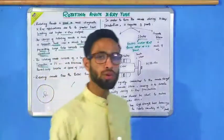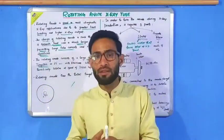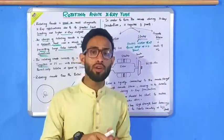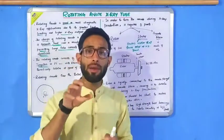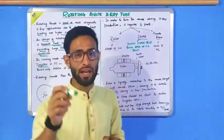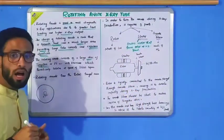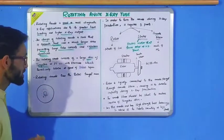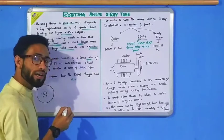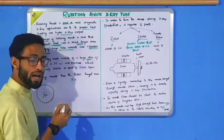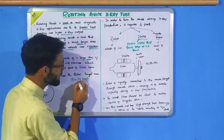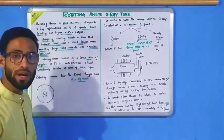One big advantage of the rotating anode is that it increases the total target area — the area where electrons bombard the anode. I will elaborate this with an example so you understand clearly. For example, at any instant of time, let the target area where electrons bombard be 14 mm.